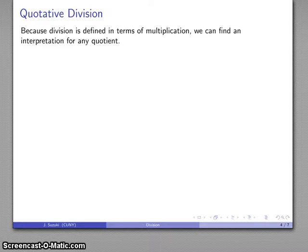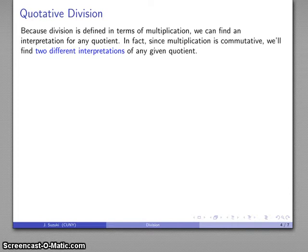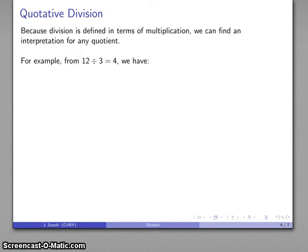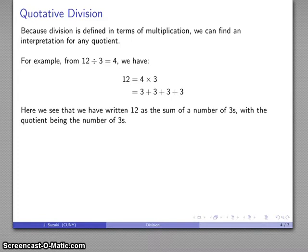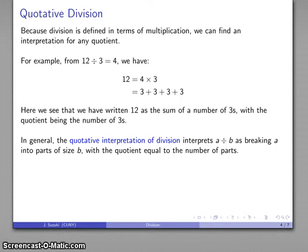Because division is defined in terms of multiplication, we can find an interpretation for any quotient. And because multiplication is commutative, there are actually two different interpretations for any given quotient. For 12 divided by 3 equals 4, we have the multiplication fact 12 equals 4 times 3, which means 12 equals 3 plus 3 plus 3 plus 3. The quotient 4 is the number of 3's needed to make 12. This gives us the quotative interpretation of division: when computing A divided by B, we break A into bits of size B, and the quotient is the number of bits.